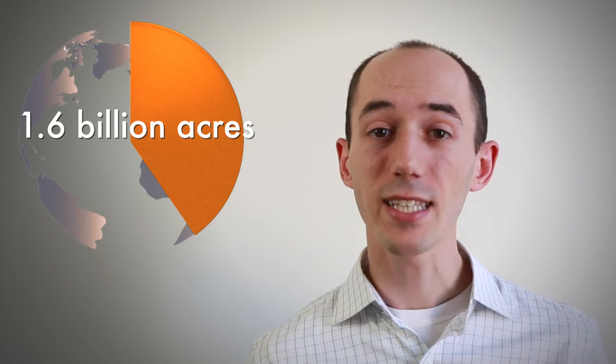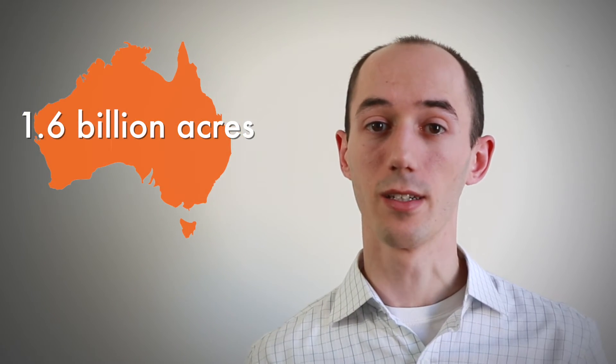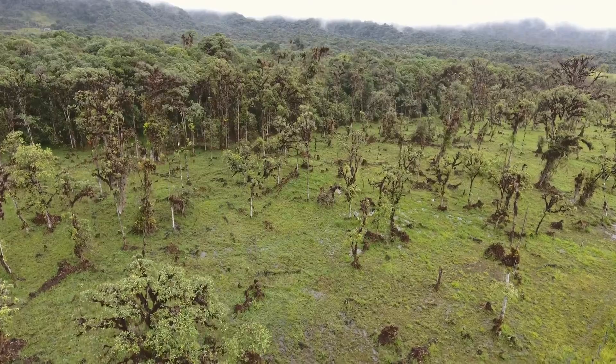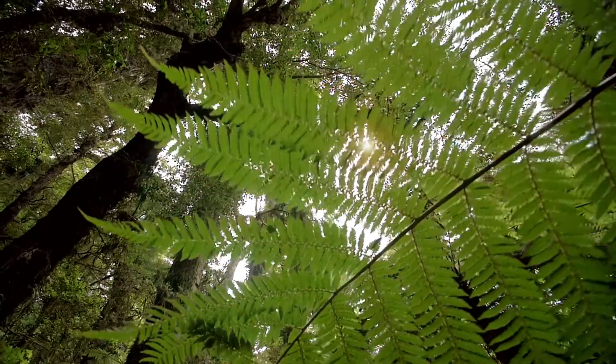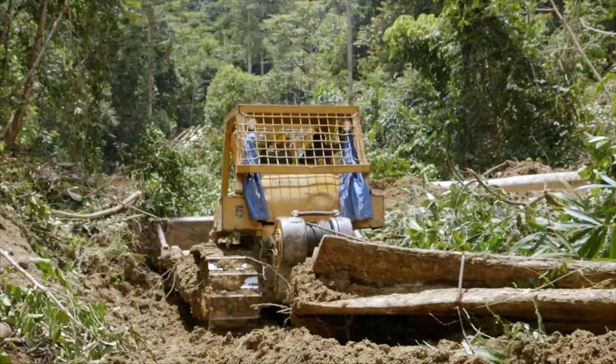I estimate that to replace all of the nitrogen that synthetic fertilizer provides today, we would need at least 40% more cropland. That's almost the size of all of Australia. All of that new farmland would mean fewer forests, it would mean pulling up prairie, it would mean converting important habitat for wildlife into cropland.